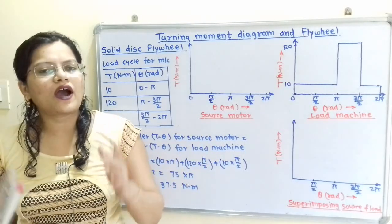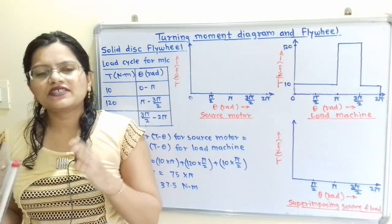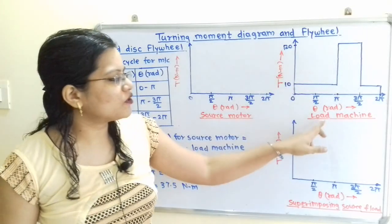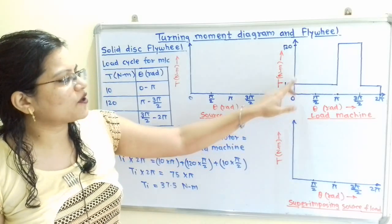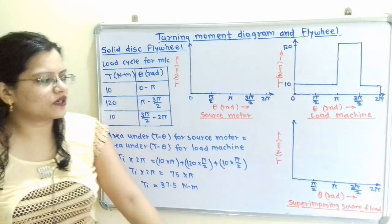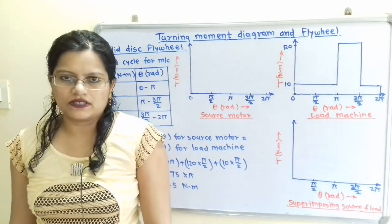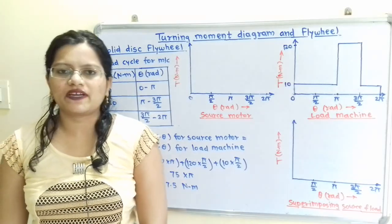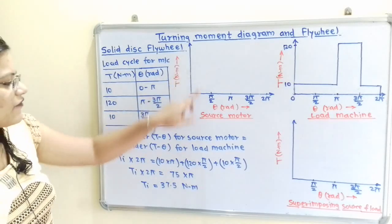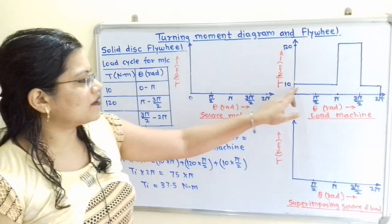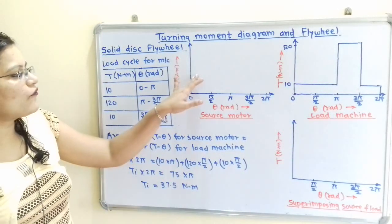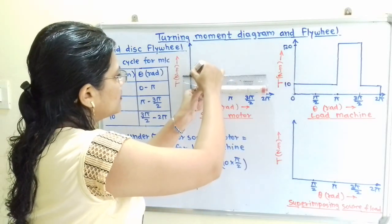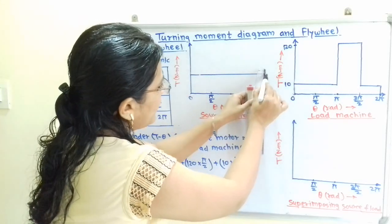Now we move to the source motor. The driving torque is constant, while the load torque is variable — varying from 10 Nm up to 120 Nm. To find this constant driving torque Ti, we use the principle that the area under the T-θ diagram for the source motor equals the area under the T-θ diagram for the load machine. Since Ti is constant, we extend one horizontal line up to crank angle 2π.